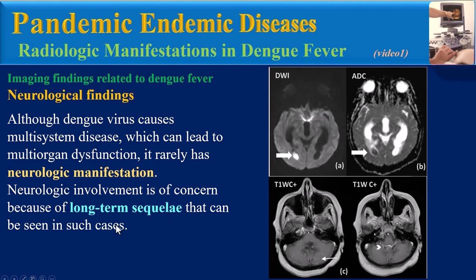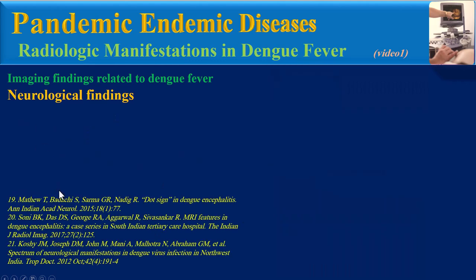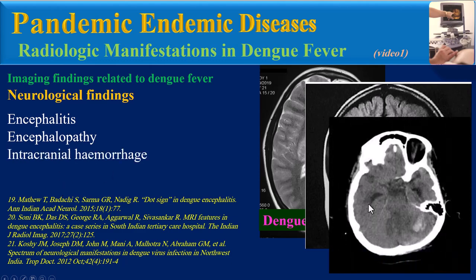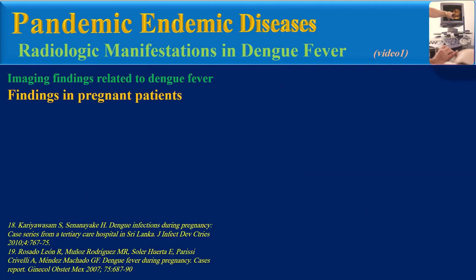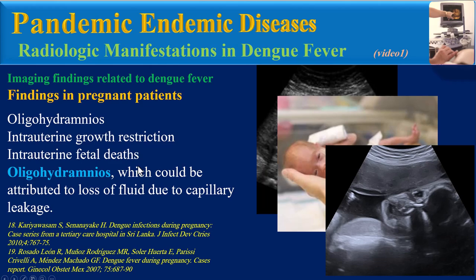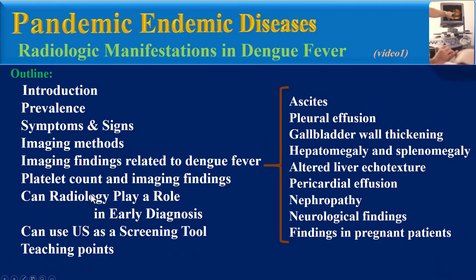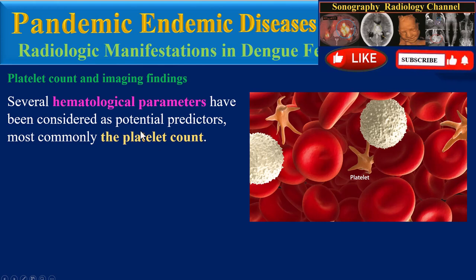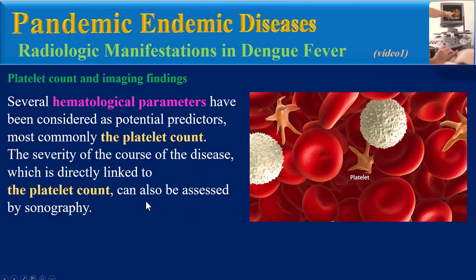Although dengue virus causes multi-system disease that can lead to multi-organ dysfunction, it rarely has neurologic manifestations. Neurological involvement is of concern because of the long-term sequelae that can occur. Some studies report cases of dengue encephalitis, encephalopathy, and intracranial hemorrhage. Regarding findings in pregnant patients, a few case reports of dengue fever in pregnancy describe findings including oligohydramnios, intrauterine growth restriction, and intrauterine fetal death — with oligohydramnios attributed to fluid loss due to capillary leakage.